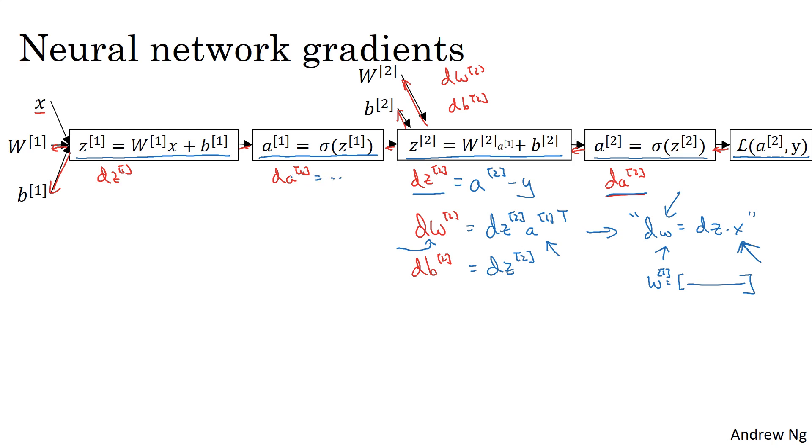This completes half of backpropagation. And then again, you can compute da1 if you wish. Although in practice, the computation for da1 and dz1 are usually collapsed into one step. So what you'd actually implement is that dz1 is equal to w2 transpose times dz2, and then times an element-wise product of g1 prime of z1. Just to do a check on the dimensions.